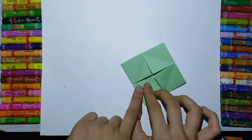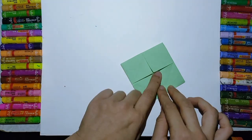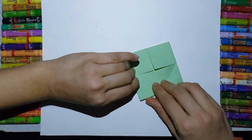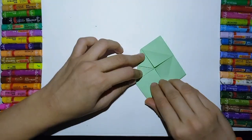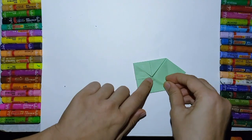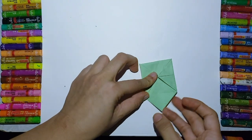Again turn the paper. Again four corners are here. One, two, three, four, and one center. Again fold the paper. One, two, three, and four.